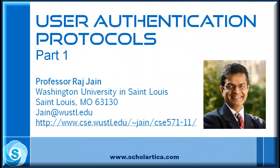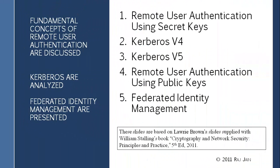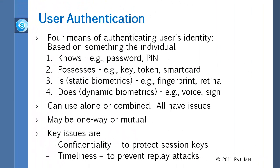User authentication is different from message authentication in a few ways. For example, users have thumbs and eyes and messages don't, so we can authenticate users by different things. Here we will talk about five different things: how to authenticate a user using secret keys — two systems used are Kerberos 4 and Kerberos 5 — how to authenticate using public keys, and then federated identity management, which means you are authenticated here but you can use it over there, some other place.